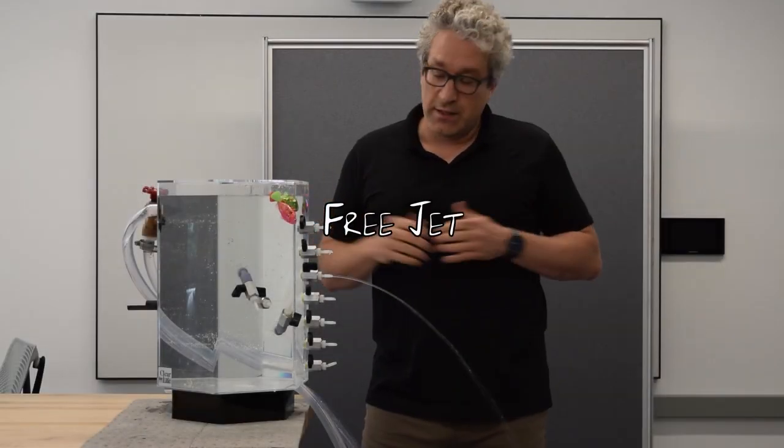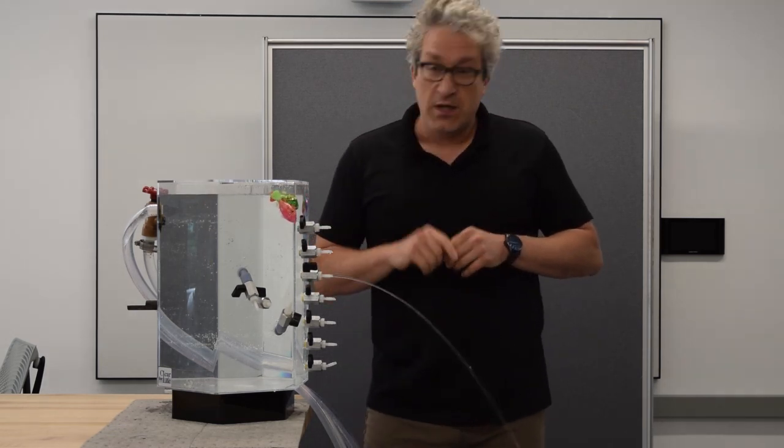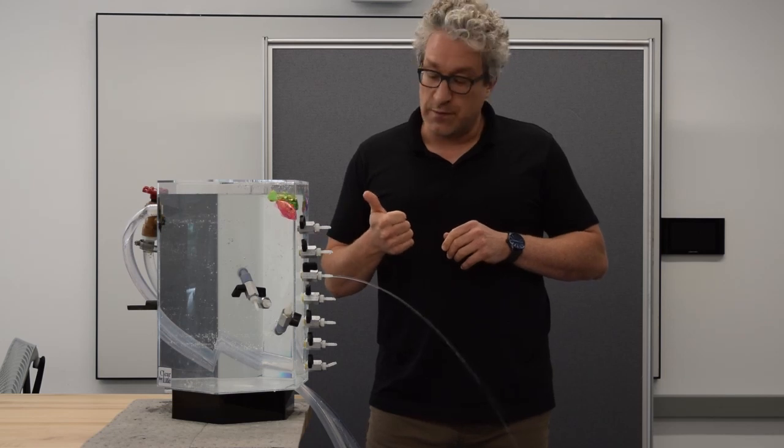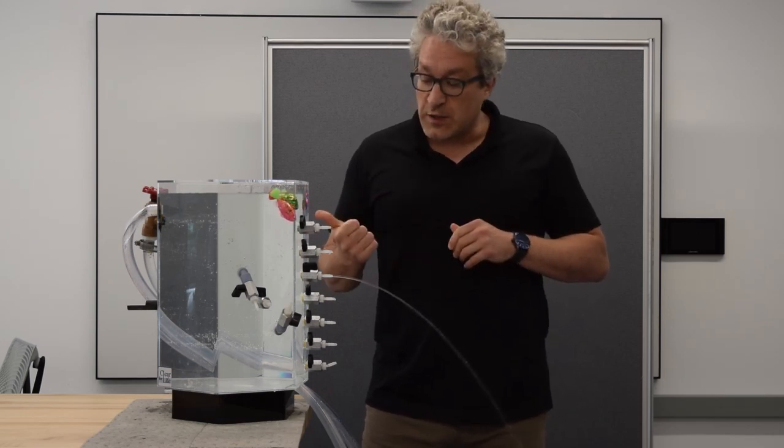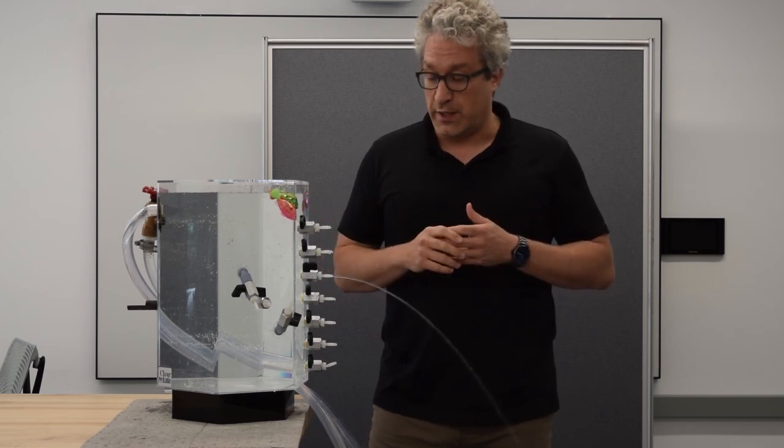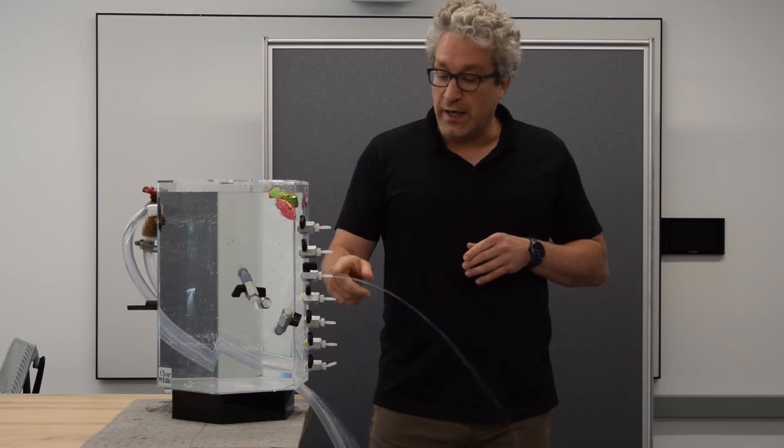A free jet is a jet that experiences no pressure gradients. This jet, as it moves through the air, isn't experiencing any viscous forces, and it's also not experiencing any pressure gradients. Because it's not experiencing any viscous forces or pressure gradients, it moves only based on the acceleration due to gravity and its initial velocity.